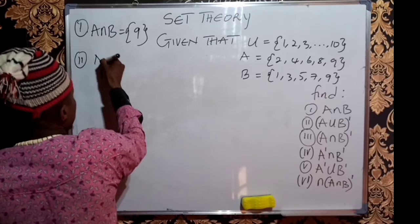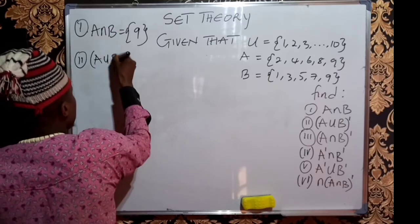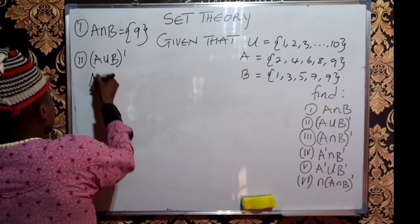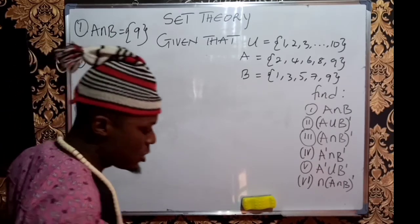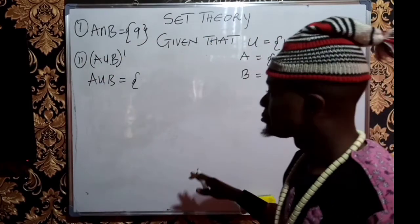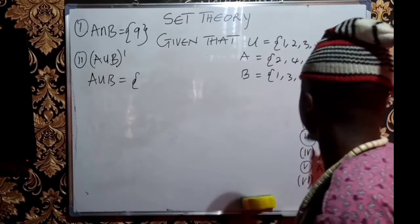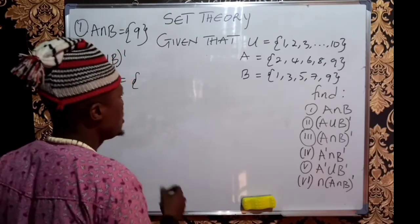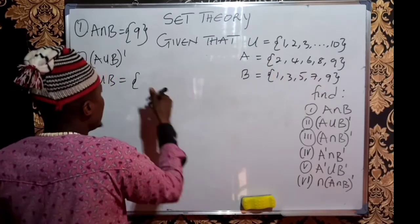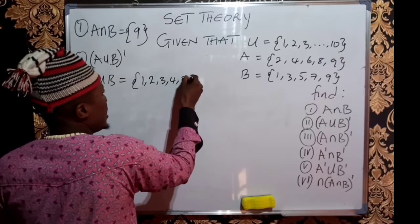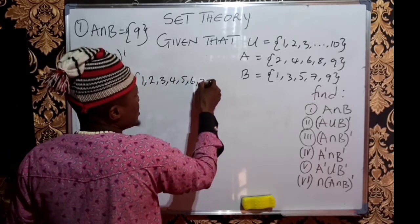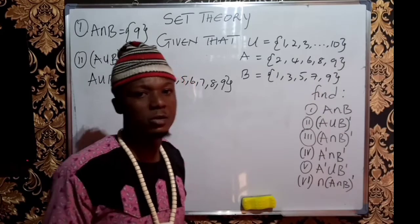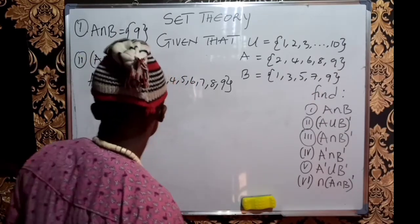Part II says we should get (A ∪ B)'. Before you can get (A ∪ B)', you need to get A ∪ B first. A ∪ B means combining the elements in sets A and B together without repeating any element. A ∪ B gives us 1, 2, 3, 4, 5, 6, 7, 8, and 9 — don't write 9 twice even though it appears in both sets. We don't repeat any element. So we've got A ∪ B.